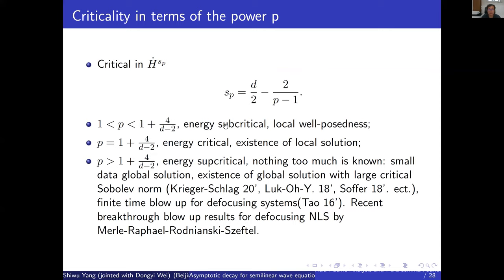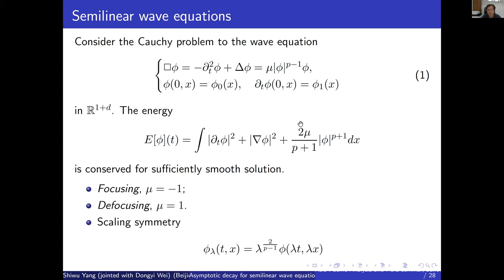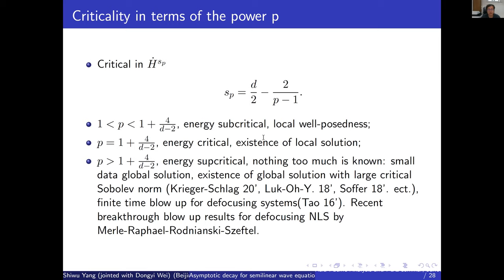When s_p is less than one, this corresponds to the energy sub-critical case. In this case you can normally control the nonlinear terms by the energy, and one can construct local well-posedness for the equation — meaning if we start with something in the energy space, we can construct a solution locally in time, with the time interval depending only on the size of the initial energy. When s_p exactly equals one, this is the energy critical case, where the Sobolev embedding is no longer compact.